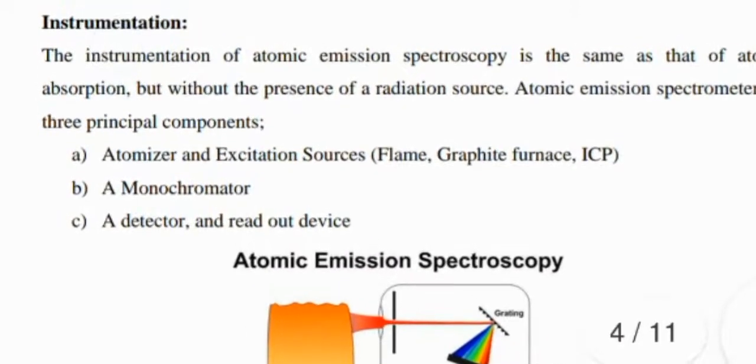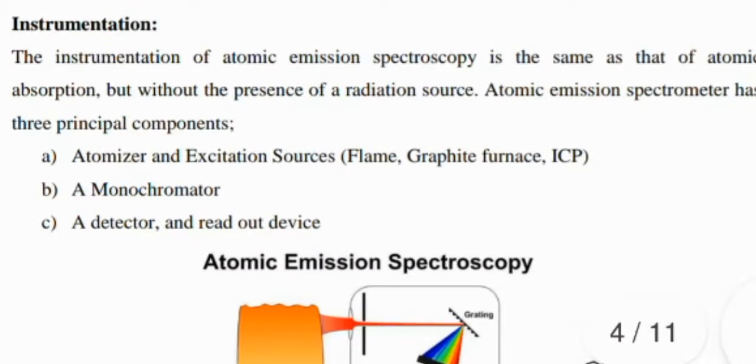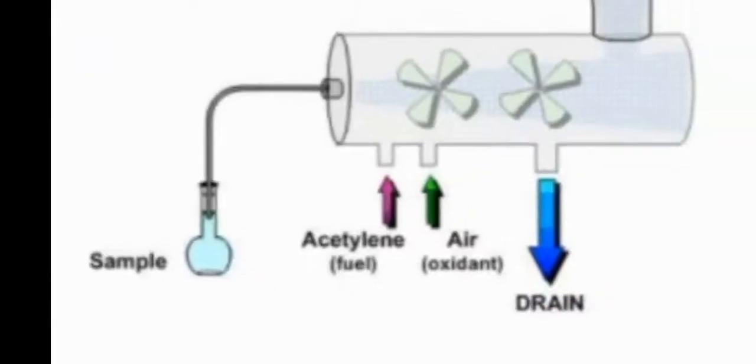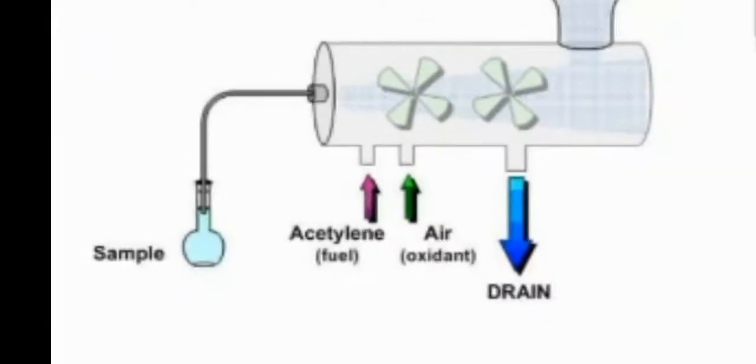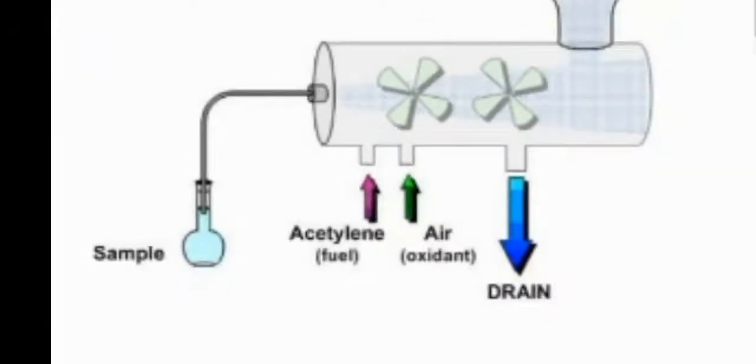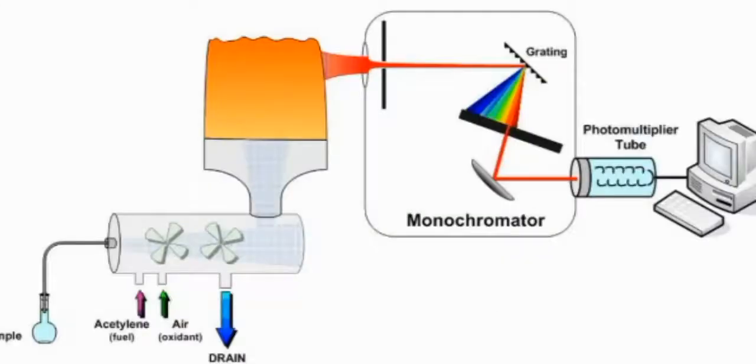Any topic in analytical chemistry includes instrumentation. It is the same as atomic absorption but without the presence of the source. It has three principal components including atomizers, monochromator, detectors, and readout devices. You can see clearly the picture where you add a sample, acetylene, and air oxidant, and then the sample goes to the